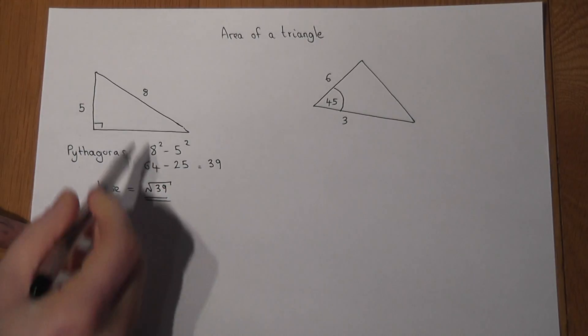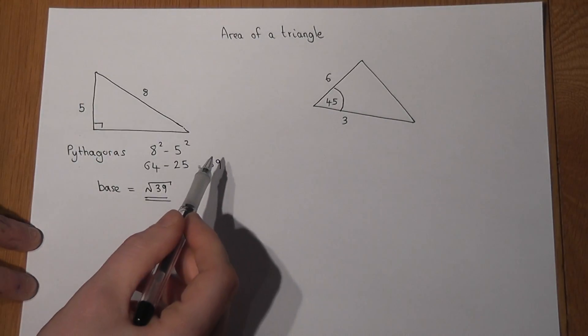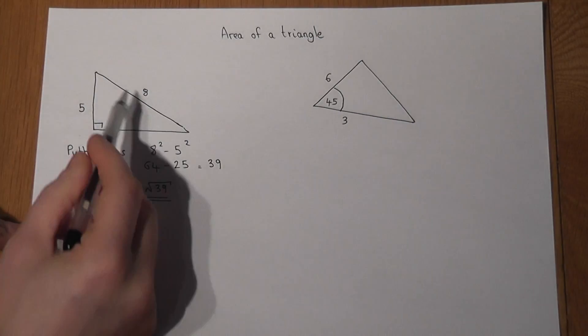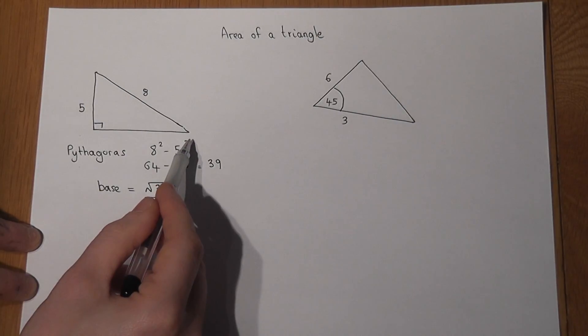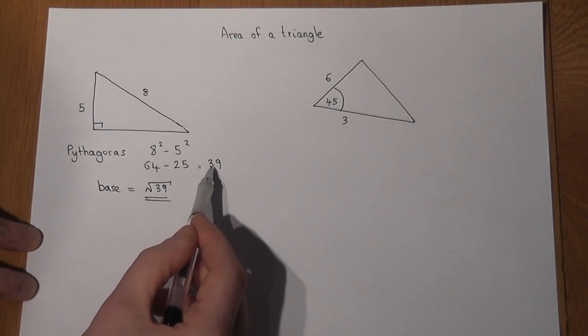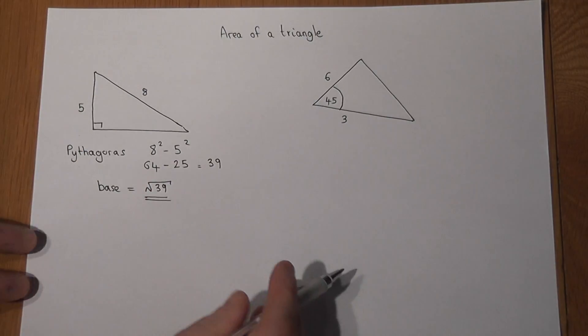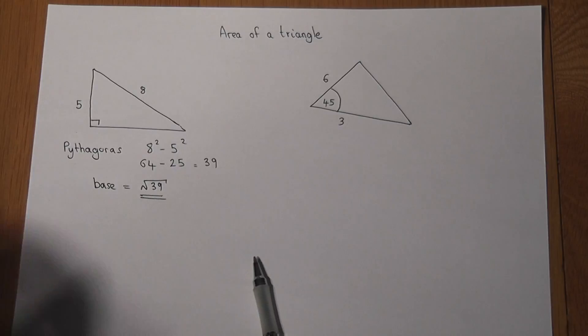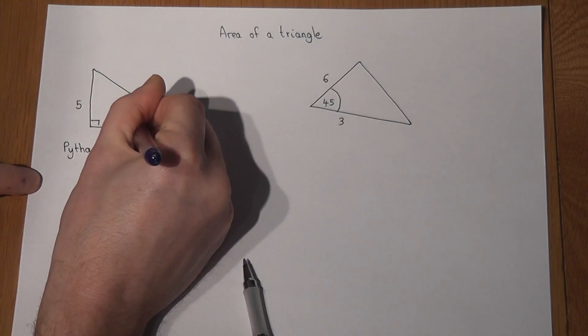So remember, if we know the hypotenuse and we want to find one of the shorter sides, we do the hypotenuse squared take away, in this case, the height squared, which gives us 39, then we square root to find out how long the side actually is. So the base of that triangle is root of 39.